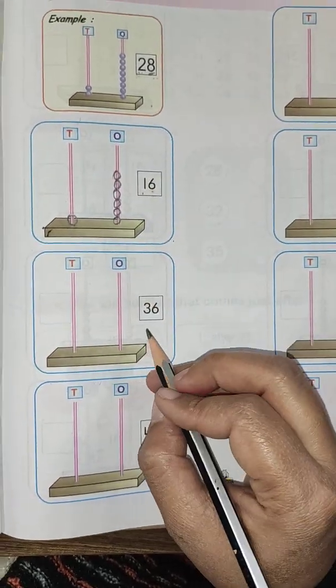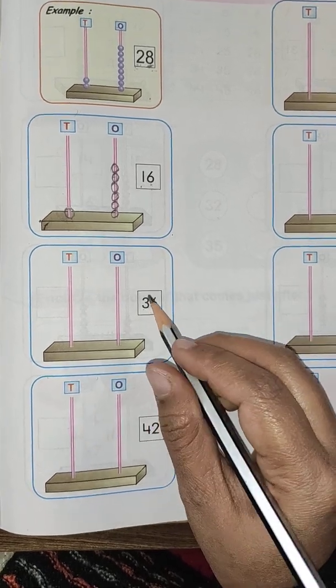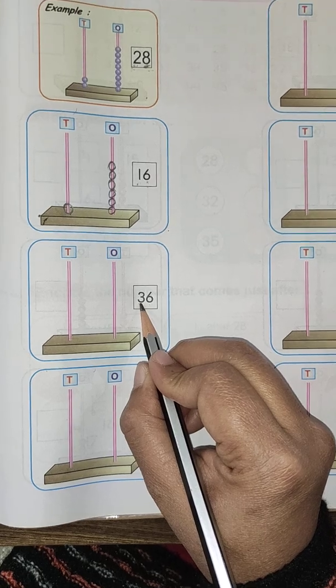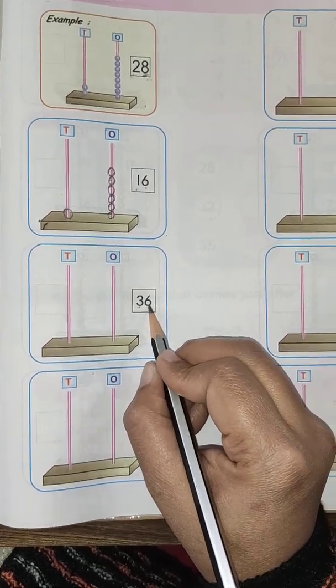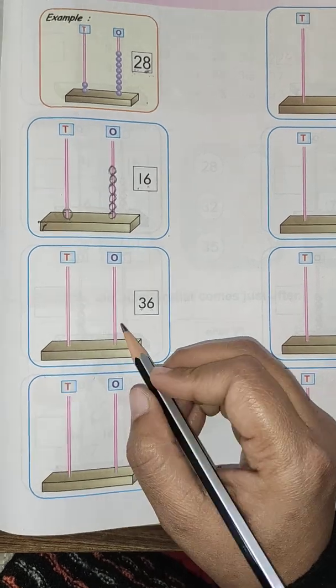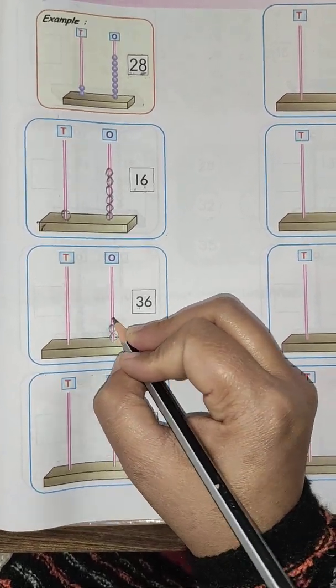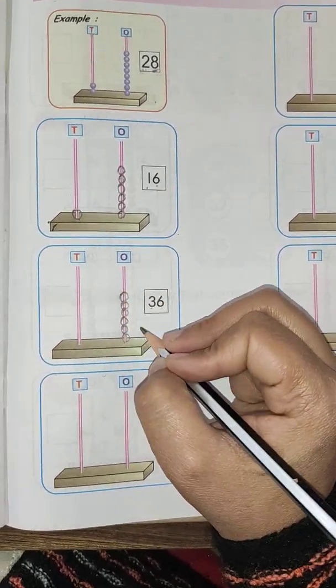Now see the next. Next number is 36. Ones place has 6, tens place has 3. So we will draw 6 in place of ones: 1, 2, 3, 4, 5, 6.